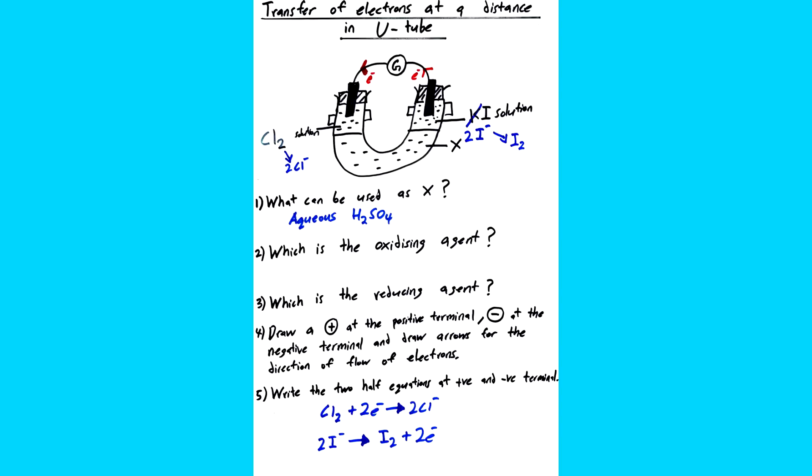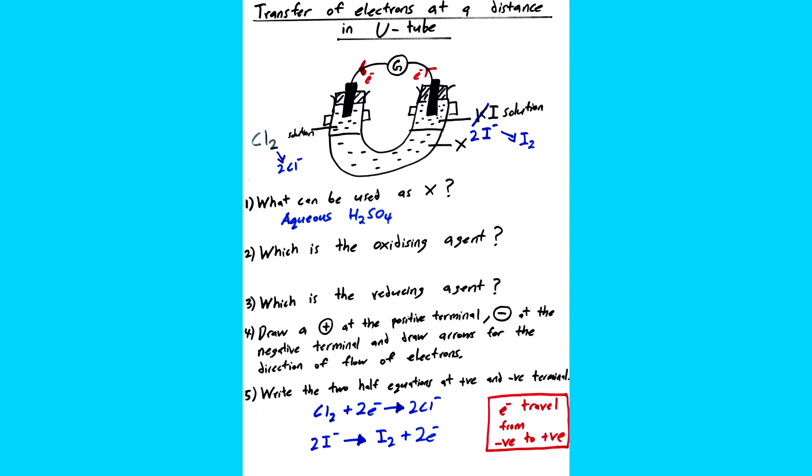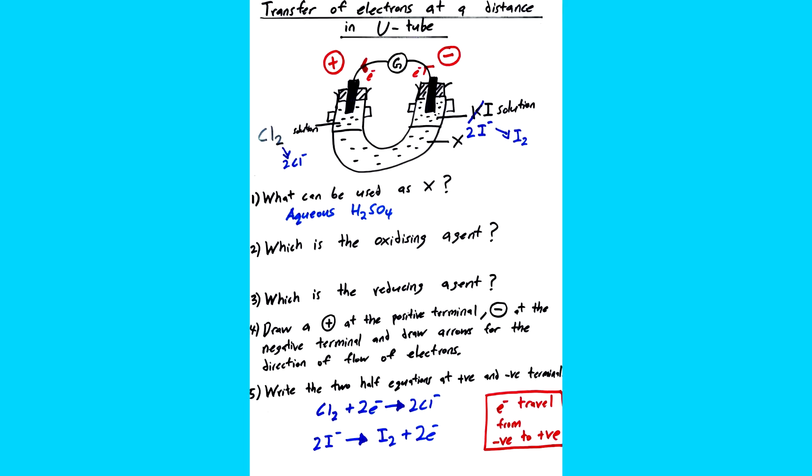So basically chlorine accepts electrons and iodine releases electrons. So using this information, I draw arrows on the wires. And then I also know that electrons travel from the negative to the positive terminal. Electron punya rumah ialah negative terminal. So masa reactions that dia kan keluar rumah pergi positive terminal. So using this information, I know that the right side is the negative terminal and the left side is the positive terminal.